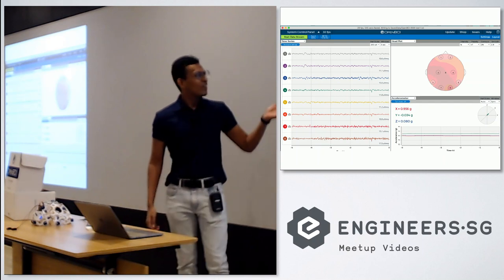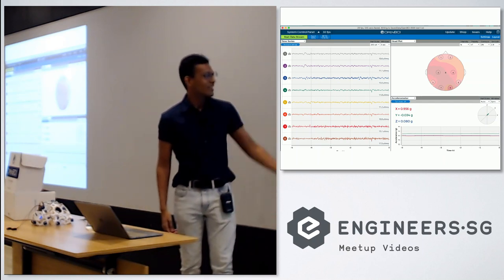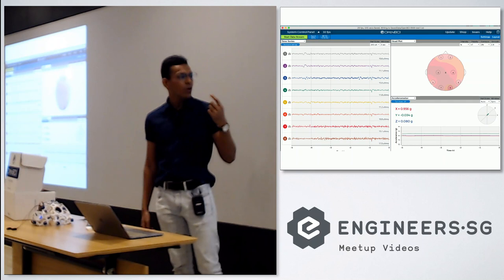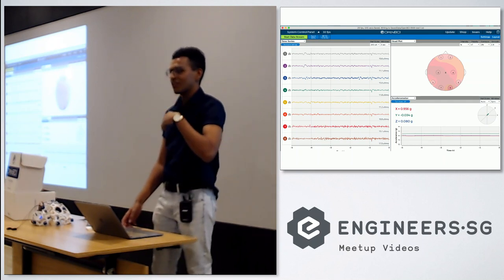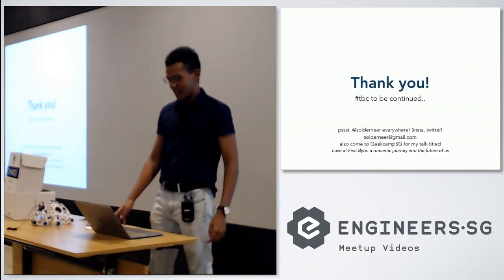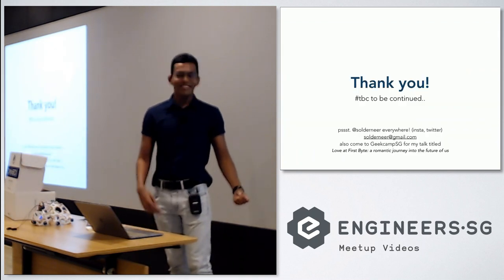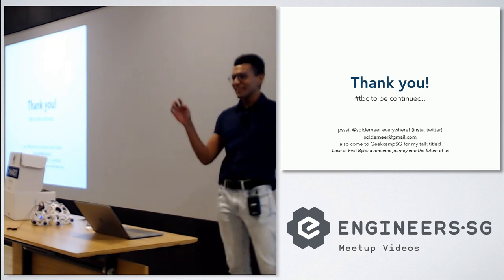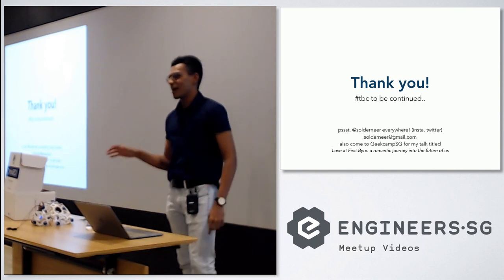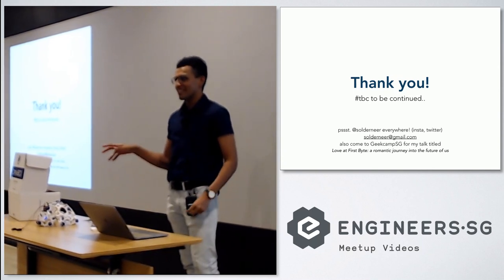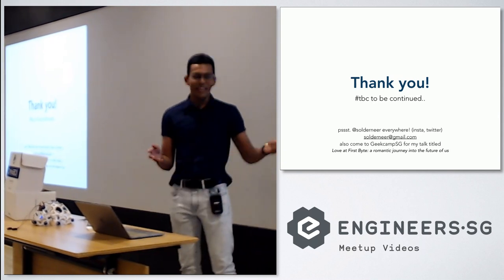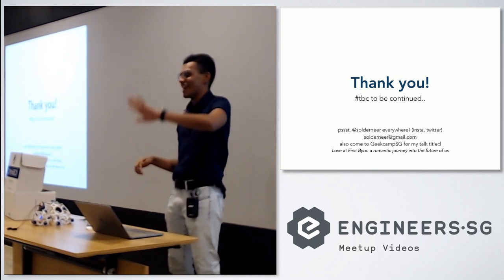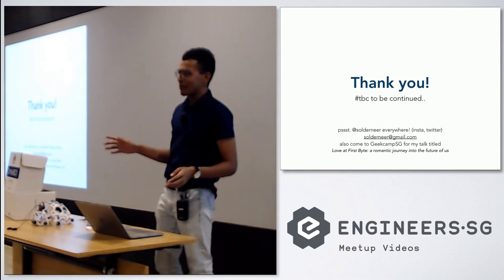What you get is this sort of UI here. The eight channels are displayed and you get the EEG sensors themselves. They also provide a few other plots you can draw, like the head-sensing plots, and you can detect how elevated your state is by basically measuring that. So that's about it — here's my email if you want to ask me questions, and this is my handle everywhere. Please come to GeekCamp SG because I'm giving a really in-depth talk on brain computer interfaces and how human evolution is going to merge with machines. It's called 'Love at First Byte: A Romantic Journey to the Future of Us,' and I'll be wearing this headset during the entire talk, with slides changing depending on what I'm feeling.